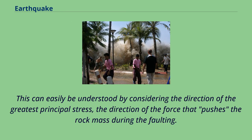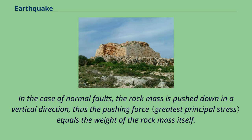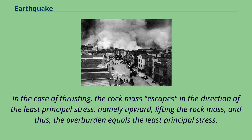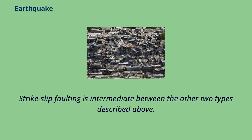This can easily be understood by considering the direction of the greatest principal stress — the direction of the force that pushes the rock mass during faulting. In the case of normal faults, the rock mass is pushed down in a vertical direction, so the pushing force equals the weight of the rock mass itself. In the case of thrusting, the rock mass escapes in the direction of the least principal stress, namely upward, lifting the rock mass, and thus the overburden equals the least principal stress. Strike-slip faulting is intermediate between the other two types.